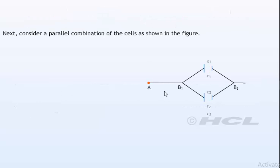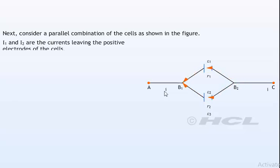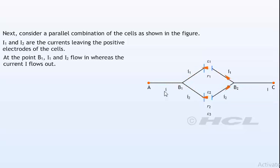Next, consider a parallel combination of the cells as shown in the figure. I1 and I2 are the currents leaving the positive electrodes of the cells. At the point B1, I1 and I2 flow in whereas the current I flows out. Since as much charge flows in as out, we have I equals I1 plus I2.